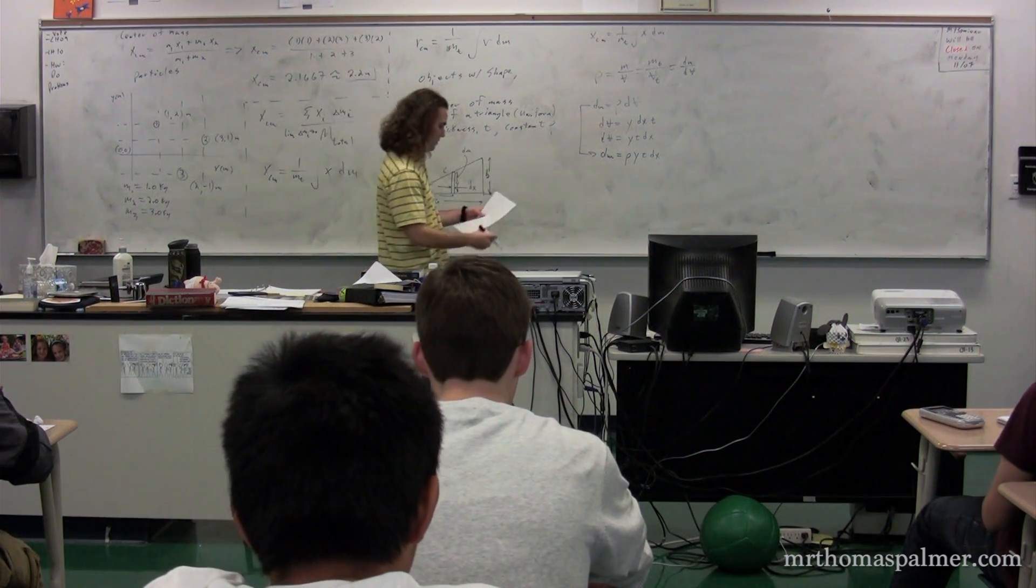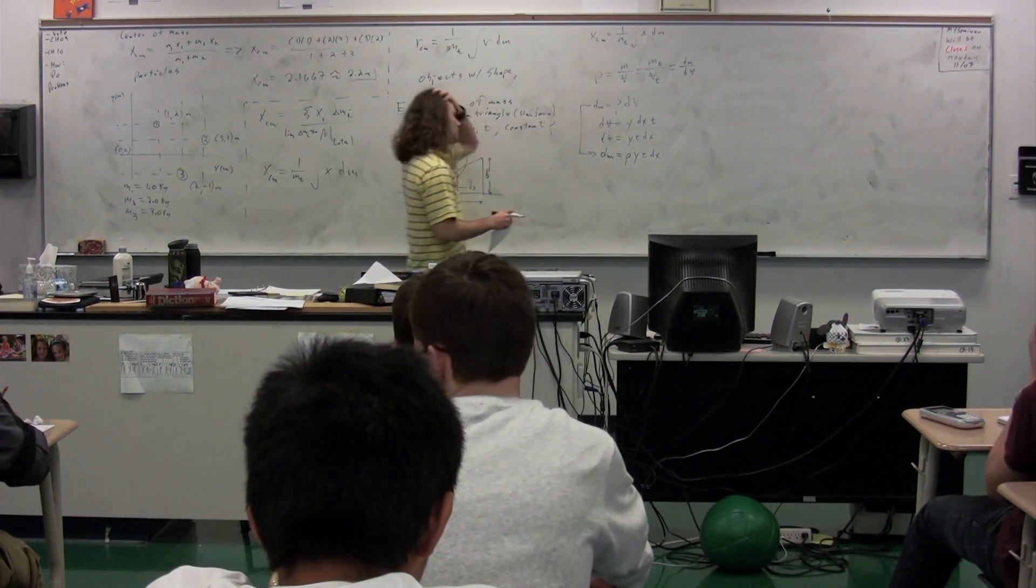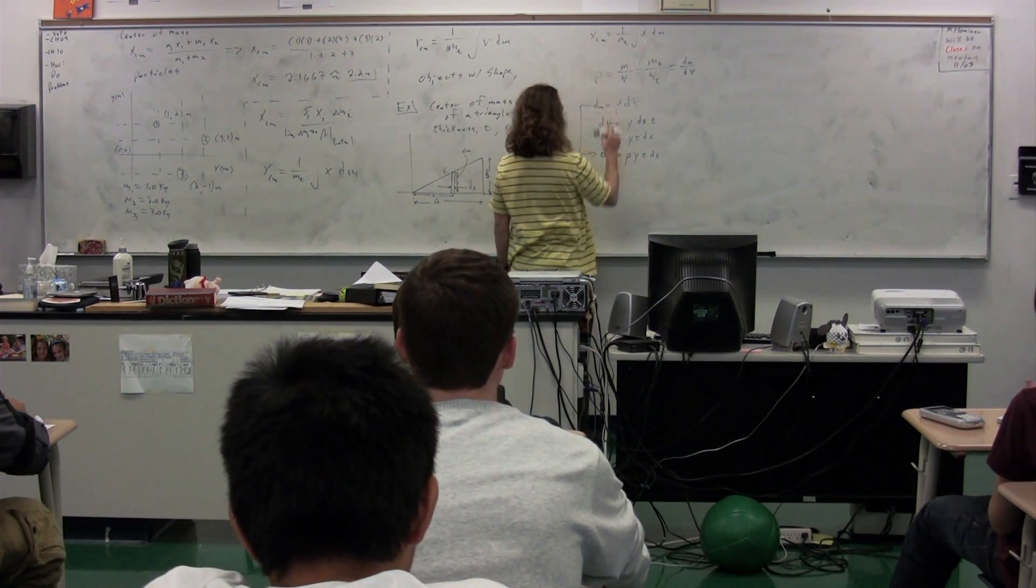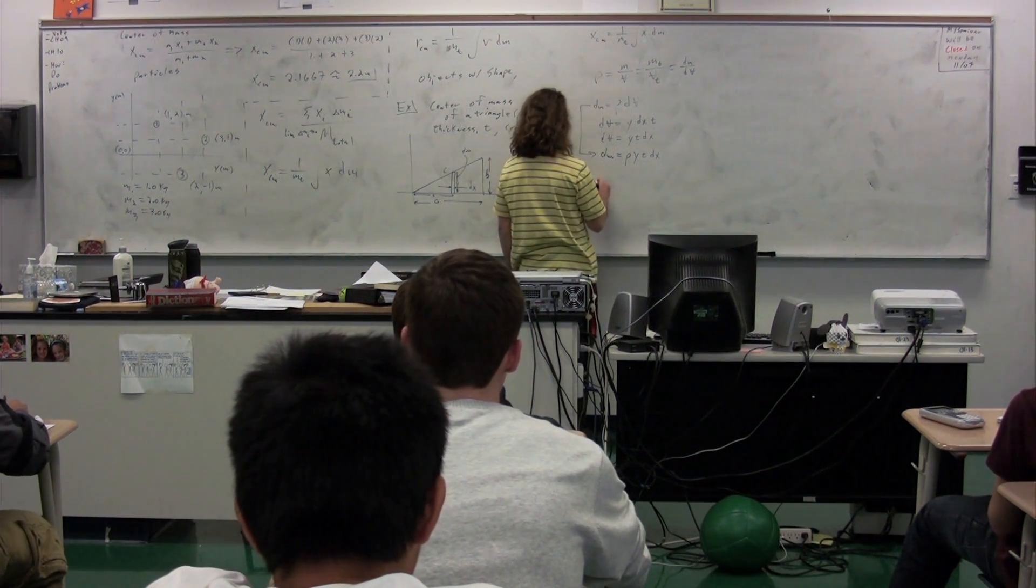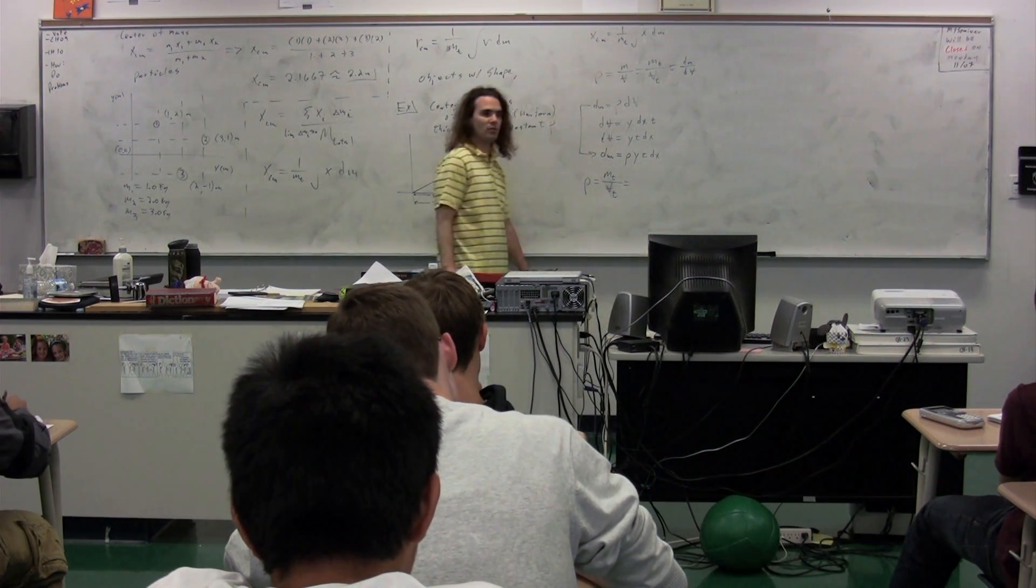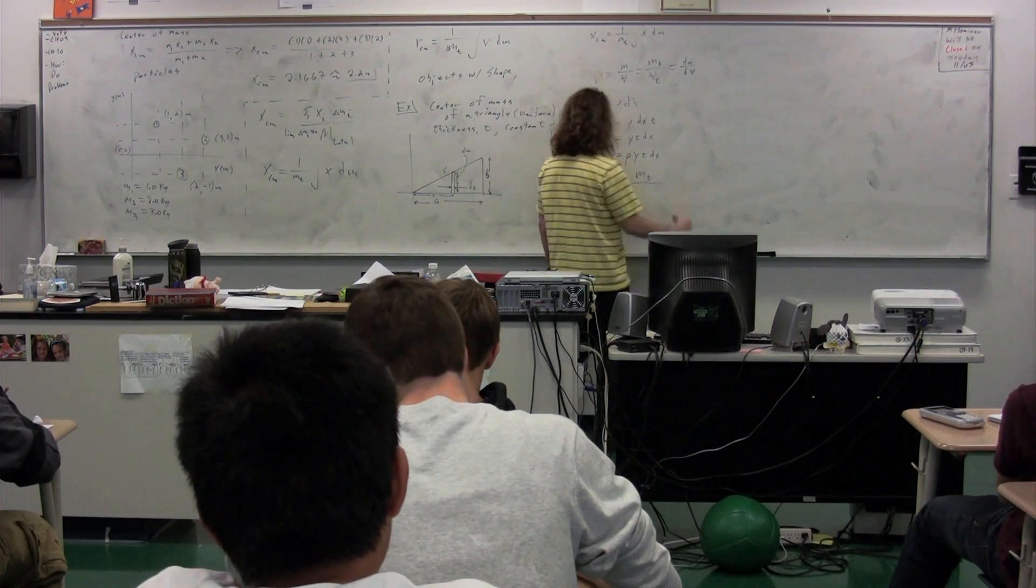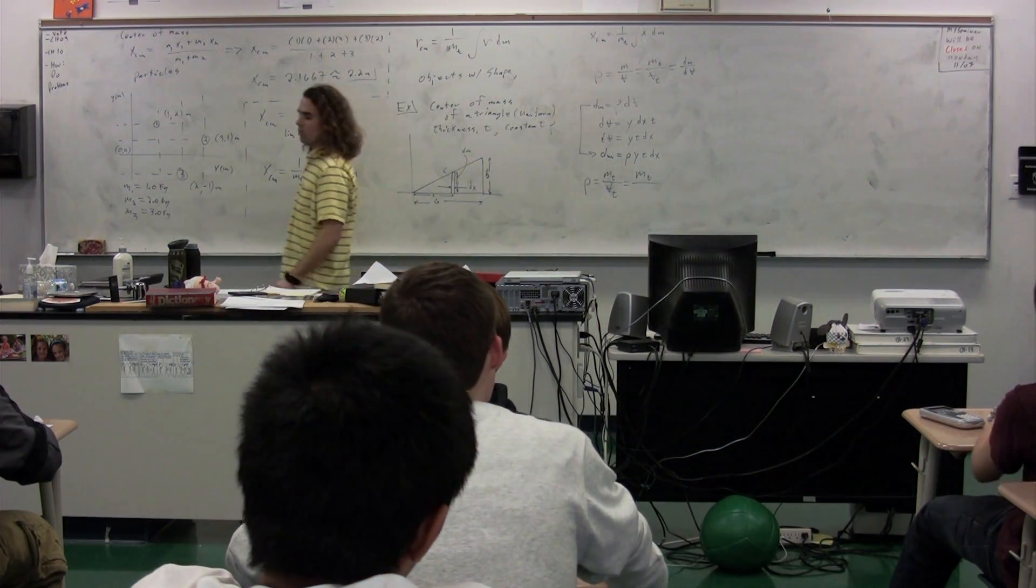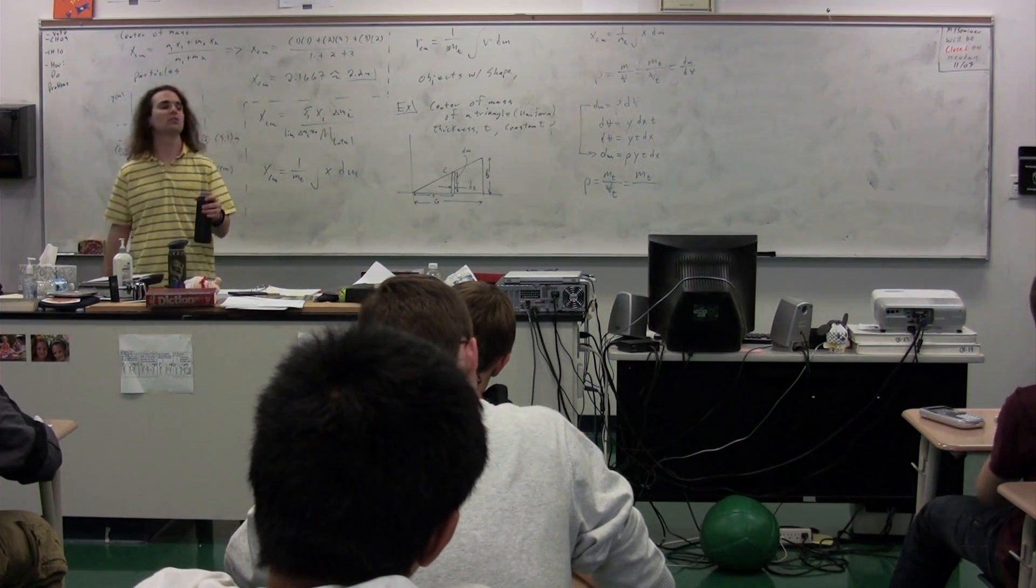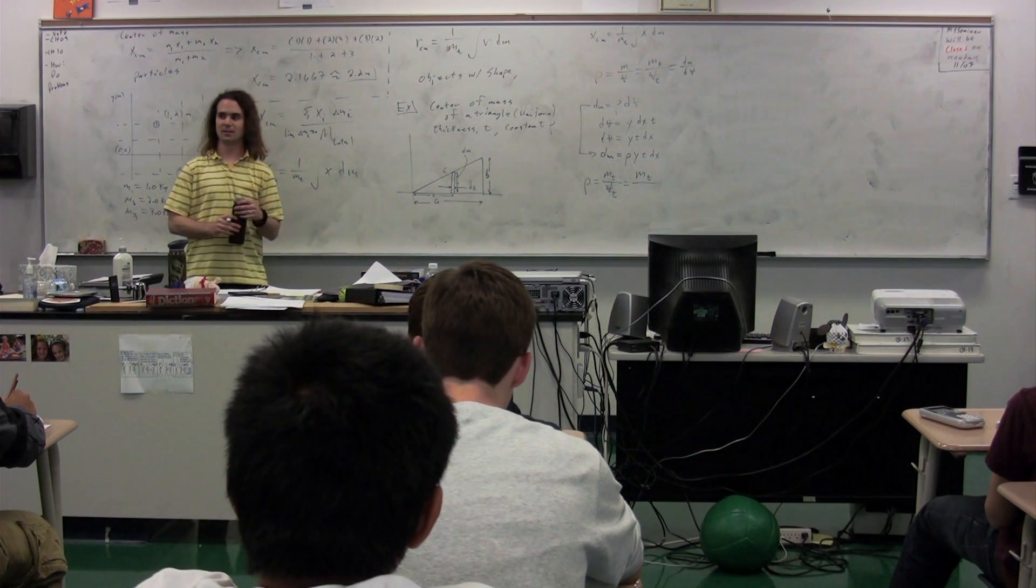So, coming back to our original equation. We also had the density was equal to the total mass divided by the total volume of the triangle. I'm going to leave the total mass there, but what, in general, is the equation for the volume of this triangle here, this triangular box?